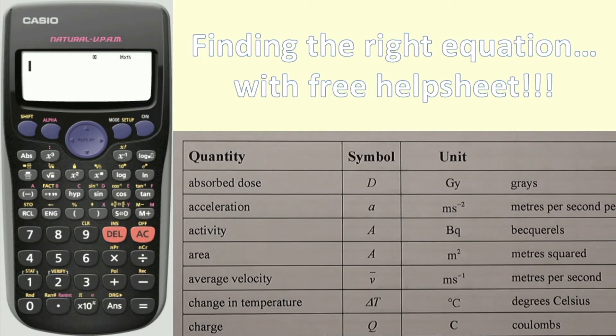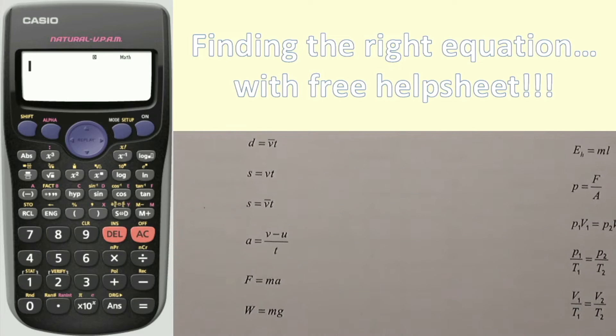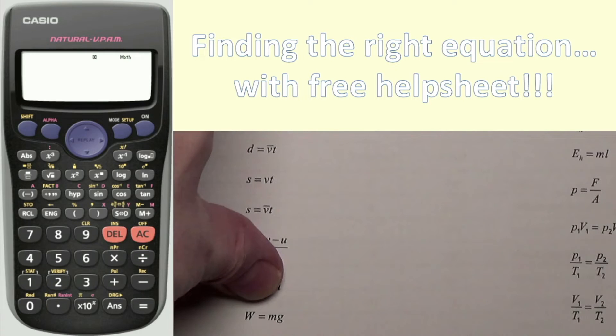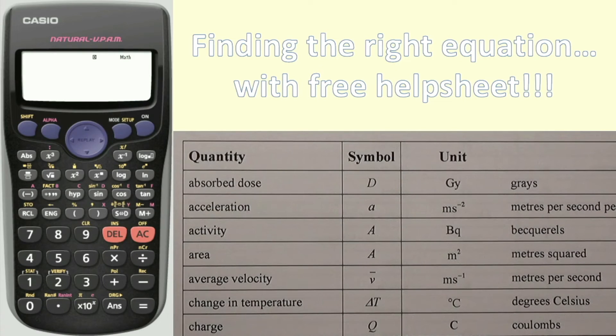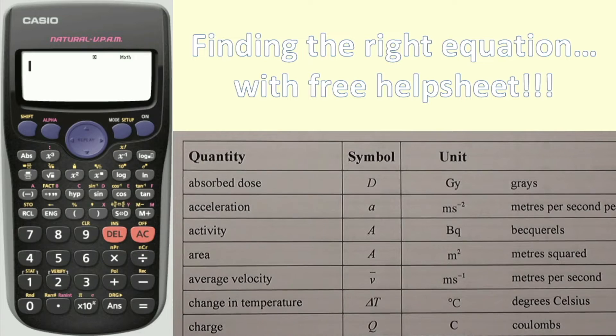This goes together with the relationship sheet itself. It's wonderful that we get this relationship sheet which tells us the equations of National 5 Physics, but sometimes that can give you a false sense of security. The important thing to remember is you might get the equations, but you don't get told that D is absorbed dose, that small a is acceleration, capital A is either activity or area. You need to memorize this all yourself.